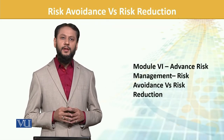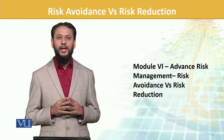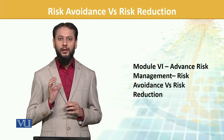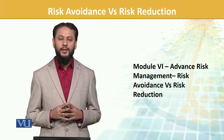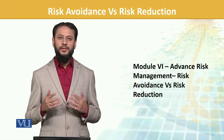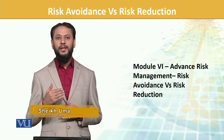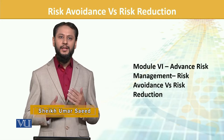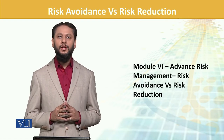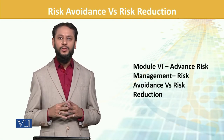Bismillahirrahmanirrahim. We are doing advanced risk management strategies, and in this we will talk about a basic conflict key: risk avoidance versus risk reduction. You can make a map in your mind before we actually jump into it. One thing is to avoid and one thing is to reduce it. These two things are linked. First we need to understand what they are, and then we have to see what direction we are going to take.